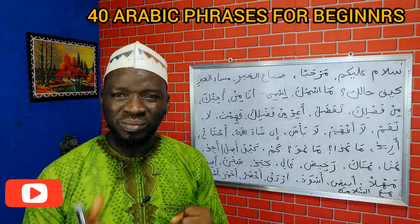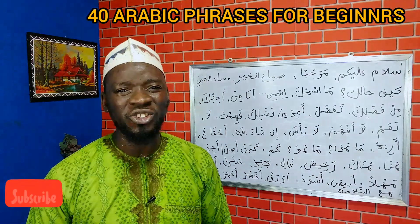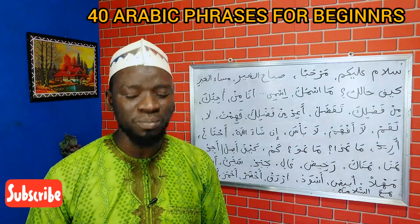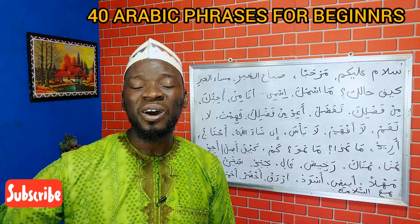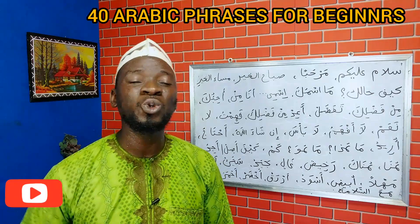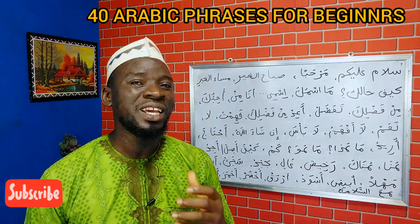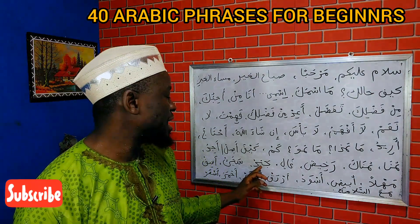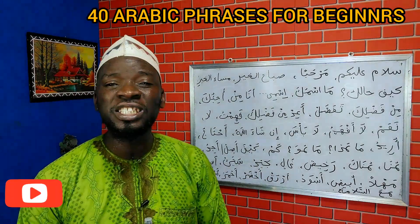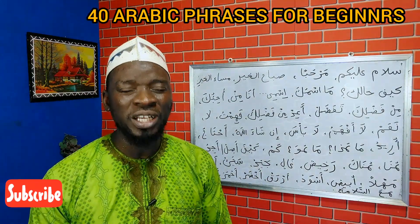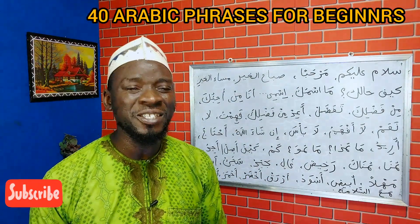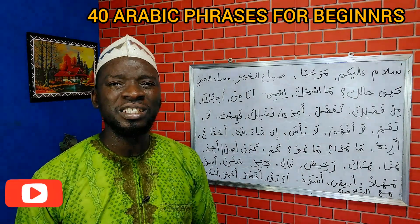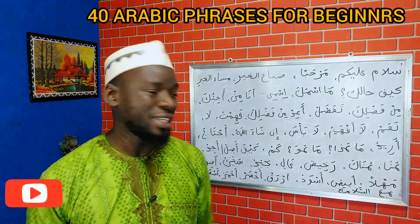Rakhis means cheap — this pen is very cheap. Ghaali means expensive — and that one is very expensive. Then jayid means good — this is good. And the opposite word means bad — this is bad.